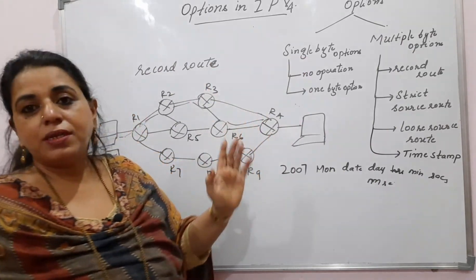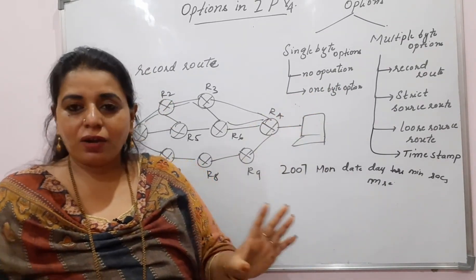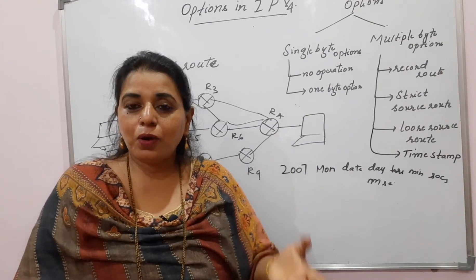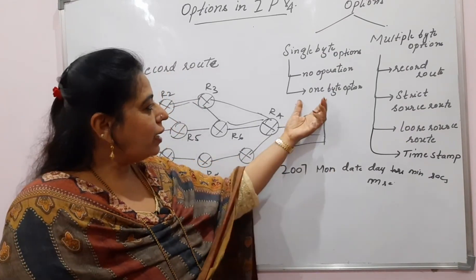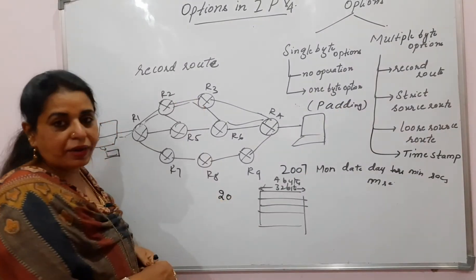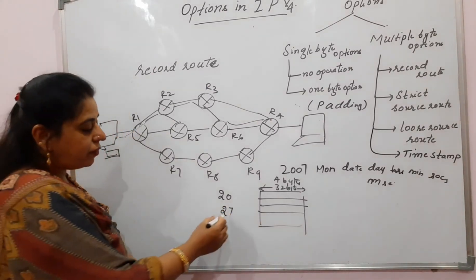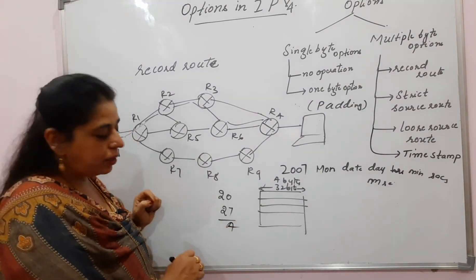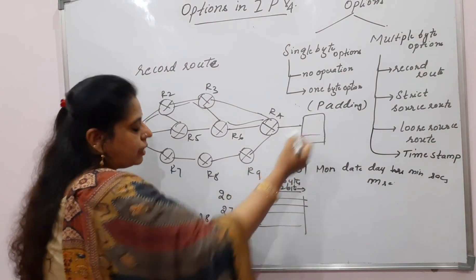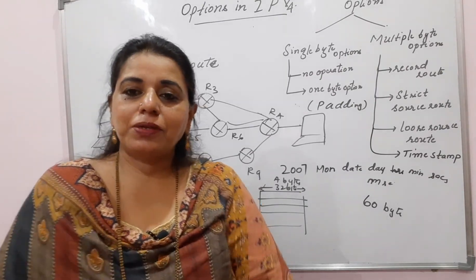The other category in options is single byte options, which includes no operation and end of option list. No operation, as the name indicates, does not convey any information in the IP datagram options, but it is included as a filler between two options. The end of option list uses one byte mainly for padding. For example, the minimum header is 20 bytes; after adding some options, if it comes to 27 bytes, then 27 divided by 4 is not divisible, meaning it is not a multiple of 4. So one byte is required to make it 28. That is why it is used as padding here.